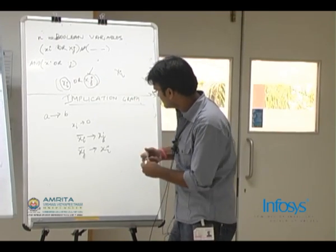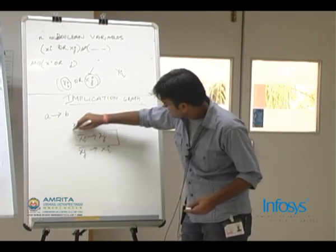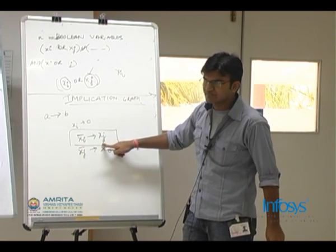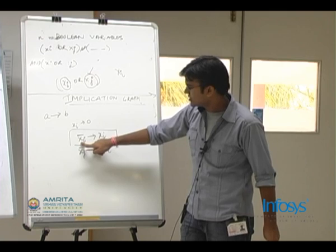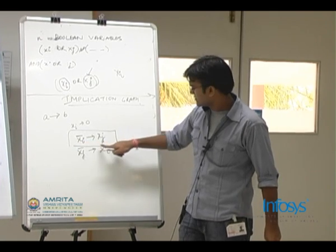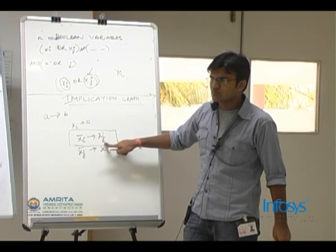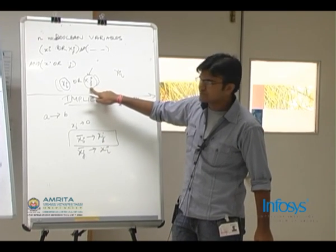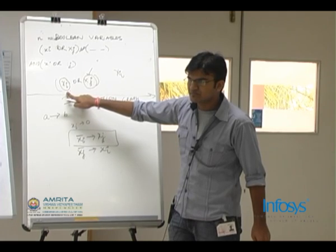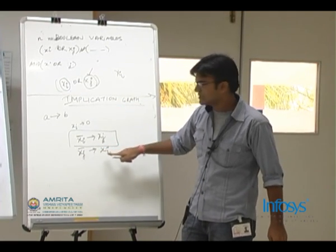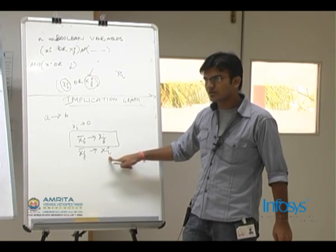So I make a relation XI complement implies XJ, which means if XI is false then this becomes true then this cannot be false anymore. Similarly if XJ is false then XI has to be true. So I make an implication statement XJ complement implies XI.